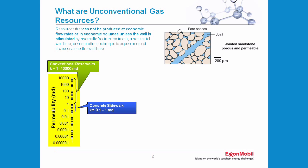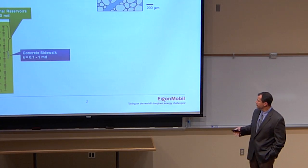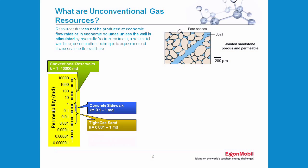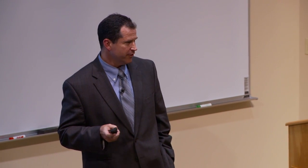As you continue down the permeability scale, we've got where a concrete sidewalk would sit. You can put water on a concrete sidewalk and it'll pool, but eventually it'll soak in — so it's a little bit less permeable. Hydrofracts have been done for 40 years, and where they were pioneered originally was on tight gas sands. These are low permeability reservoirs that have hydrocarbons in them but needed this kind of stimulation to produce. Tight gas reservoirs are anywhere from 1 millidarcy to 0.001 — 3 to 6 orders of magnitude less permeable than a conventional reservoir.